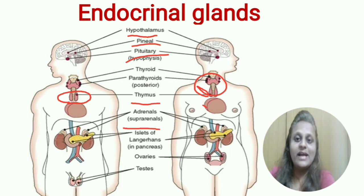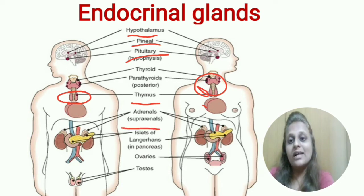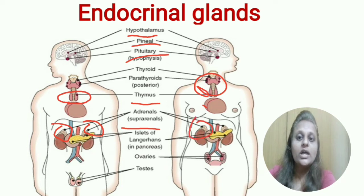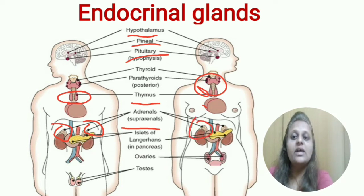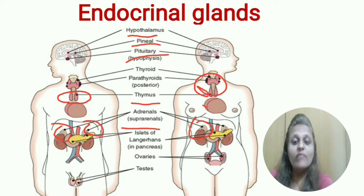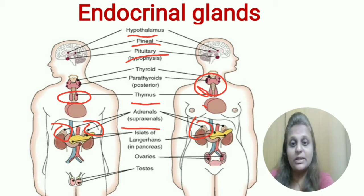The adrenal gland is present in the upper region of the kidney — its location is shown here. Next, the Islets of Langerhans are present in the pancreas, and the pancreas secretes the insulin hormone.